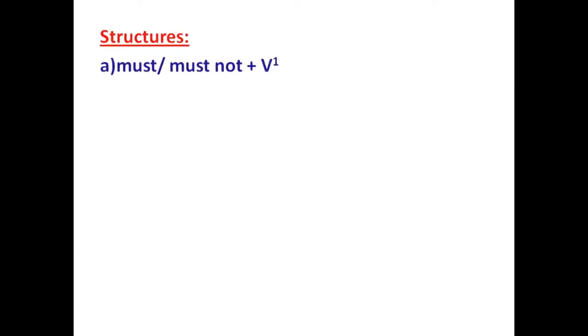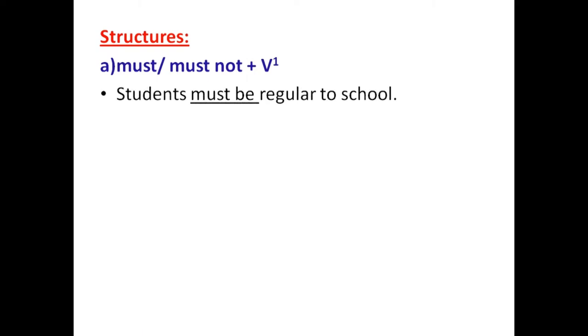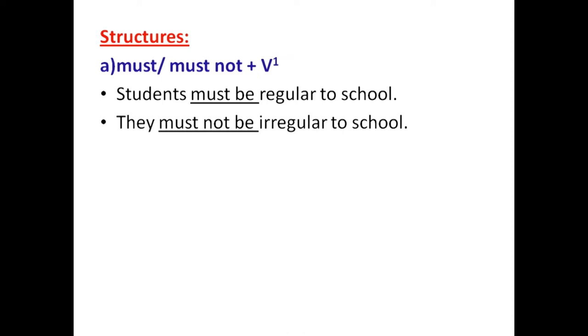Structure A is must or must not plus verb. Example: students must be regular to school — that is the rule of the school. Using must not: students must not be irregular to school. In both these sentences we have must plus V1.